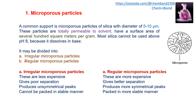Silica microporous particles can be divided into irregular and regular types, with inverse properties. Irregular particles are less expensive but give poor separation and produce unsymmetrical peaks; they cannot be packed in a stable manner due to their irregular size. Regular (spherical) particles are more expensive but give better separation, produce more symmetrical peaks, and can be packed in a stable manner due to their regular size.